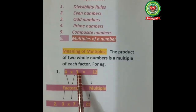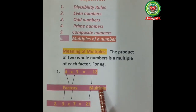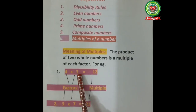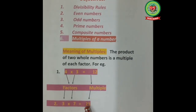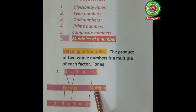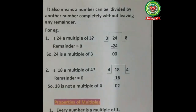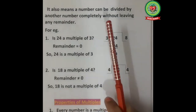So 4 and 3 are the factors and 12 is a multiple. It means 12 is a multiple of 3 and 4. Second example: 3 multiply 7 is equal to 21, it means 3 and 7 are factors and 21 is a multiple. So 21 is a multiple of 3 and 7.